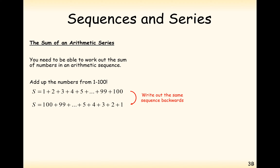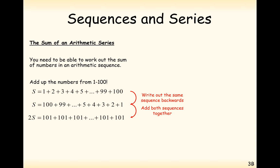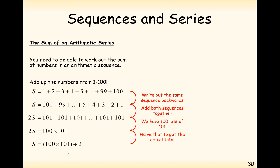We're going to reverse the order of that addition and add up in columns. So 1 add 100 is 101, 2 add 99 is 101, 3 add 98 is 101 — every pair sums to 101. That gives us 100 lots of 101, so 2S equals 100 times 101. Dividing by 2 gives us 100 times 101 divided by 2, which equals 5050.